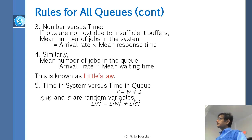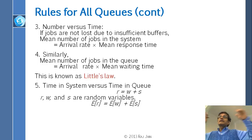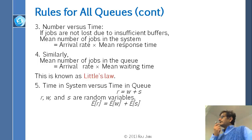One of the biggest laws: the mean number of jobs in the system equals the arrival rate times the mean response time. You can stand outside the system, measure the arrival rate and the mean response time, and find out how many people are inside. This is Little's law, one of the fundamental laws of queuing theory. It also applies to any part of the system: mean number waiting equals arrival rate times mean waiting time.